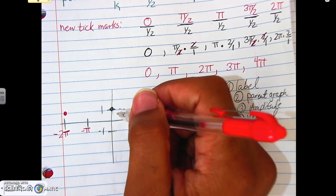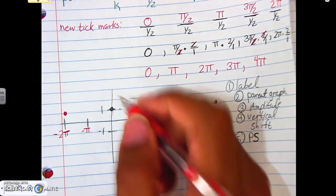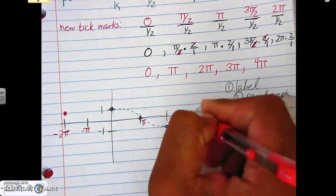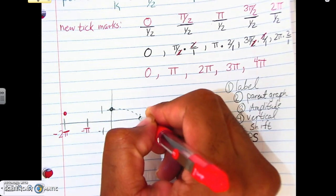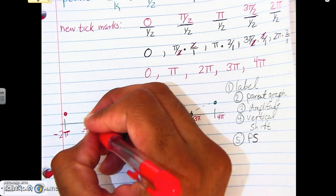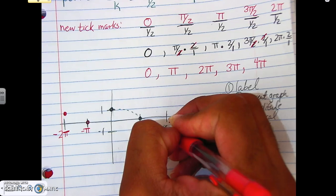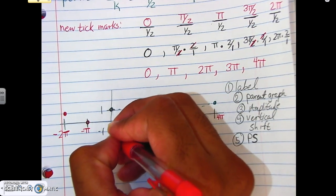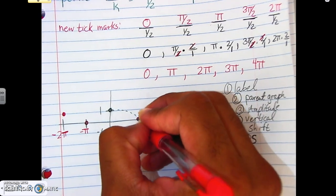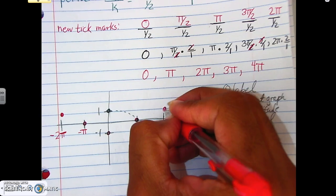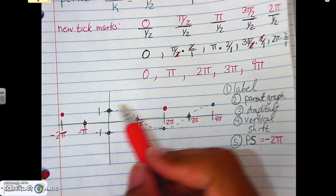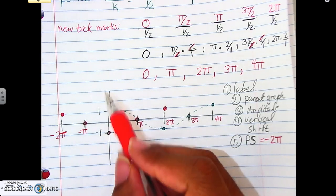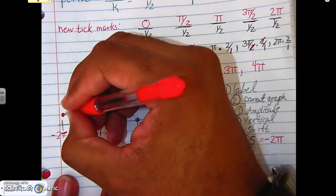Since we moved the starting point two places to the left, every single point on the graph also moves two places to the left. Each point shifts over one, two — matching the phase shift of negative two pi. We start at the y-axis and move everything left, then draw the solid graph in its new position.